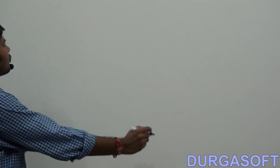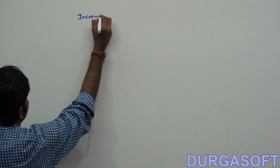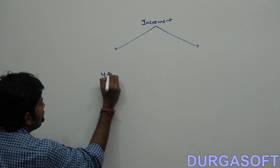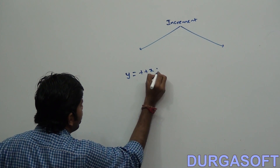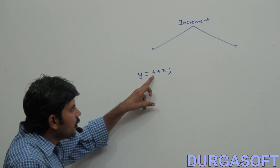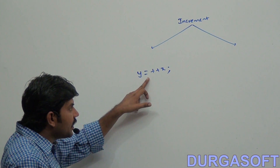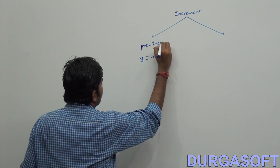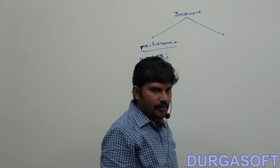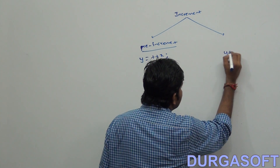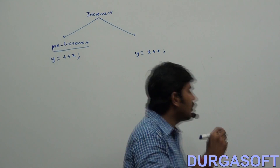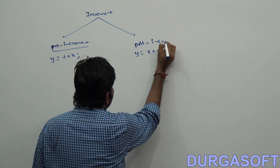Increment and decrement operators. How many increment operators are there? There are two increment operators. Now observe: y equals ++x — this type of assignment is called the pre-increment operator. Next, y equals x++ — this type of increment operator is called the post-increment operator.